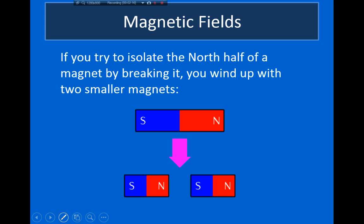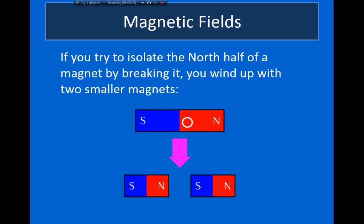Some of you may be thinking: couldn't I create a magnetic charge by breaking a magnet in half? No — if you break a magnet in half, you're left with two smaller magnets, each with its own north and south pole. This will make a lot more sense when we talk about where magnetic fields actually come from in a later video.